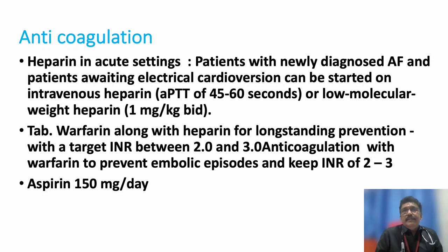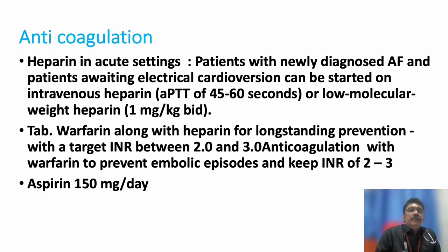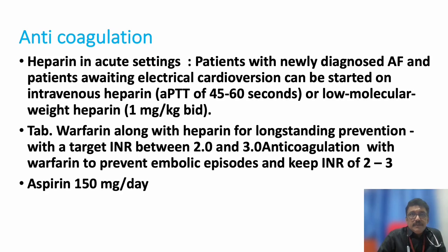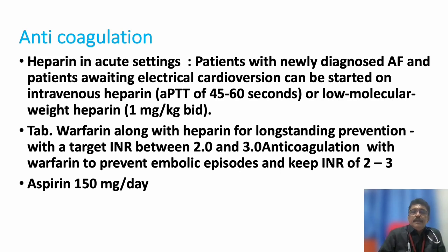Anticoagulation is very important in AF because atrial stasis leads to clot formation. Heparin is used in acute settings; warfarin for long-term therapy; aspirin can be added. When starting heparin, aPTT should be kept at 45 to 60 seconds. If aPTT monitoring is not possible, low molecular weight heparin at 1 mg/kg BD can be used. Warfarin should be started alongside heparin since it takes about seven days to reach peak effect. After one week, heparin can be stopped and warfarin continued, with INR maintained at 2 to 3.